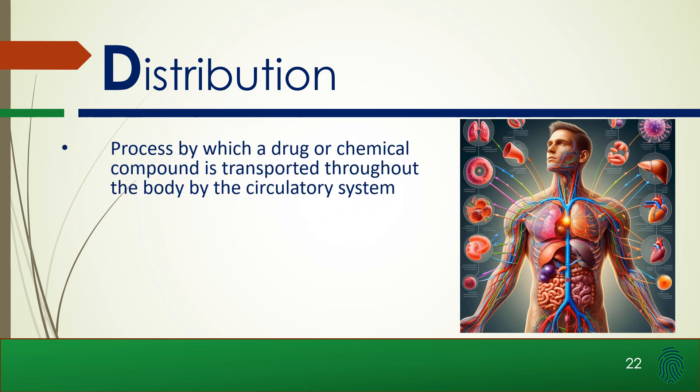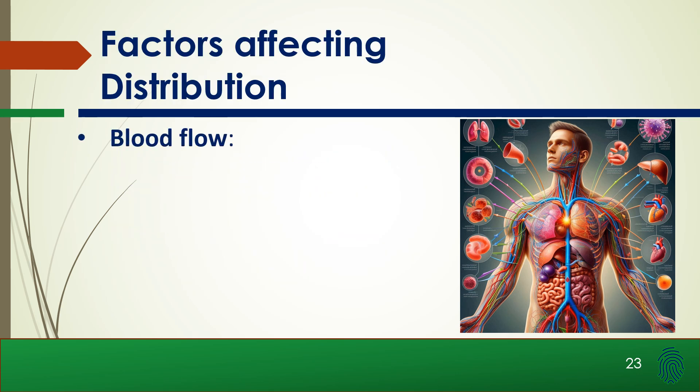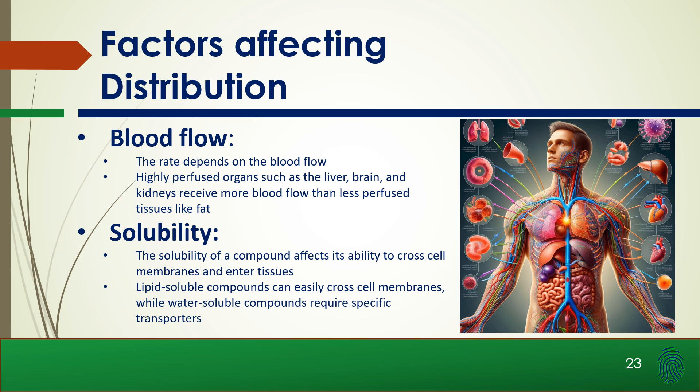Distribution is the process by which a drug or chemical compound is transported throughout the body by the circulatory system. After absorption, the compound enters the bloodstream and is carried to various organs and tissues. Factors affecting distribution include blood flow — highly perfused organs such as the liver, brain, and kidneys receive more blood flow than less perfused tissues like fat. Solubility also matters: lipid-soluble compounds can easily cross cell membranes, whereas water-soluble compounds require specific transportation mechanisms.